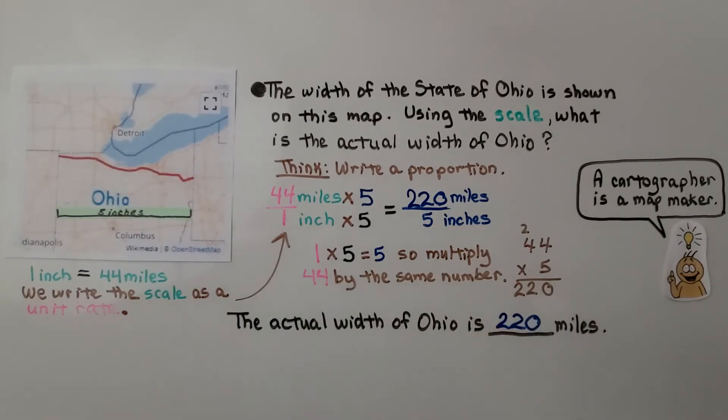And a cartographer is a map maker. That's the person who makes a map. We turned the scale into a unit rate, and then made an equivalent rate.